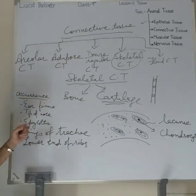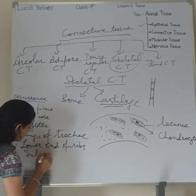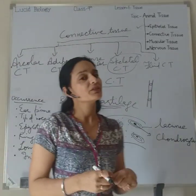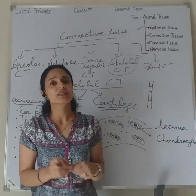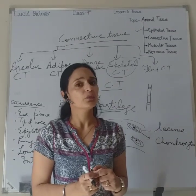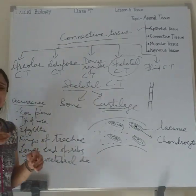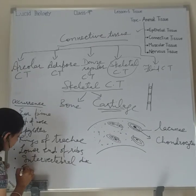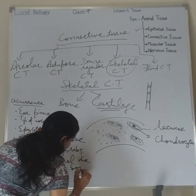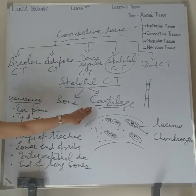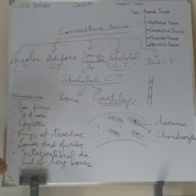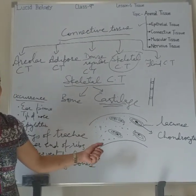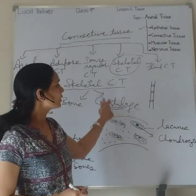Cartilage is also found at the lower end of ribs and in the intervertebral discs. The vertebral column is your backbone, made up of 33 small bones called vertebrae. Between each vertebra there is a layer of cartilage to avoid friction. It is also present at the ends of long bones. The basic function of cartilage is to provide flexibility and support to different body parts and to smoothen the surface at joints.